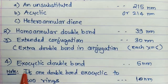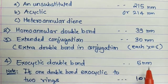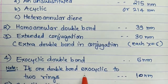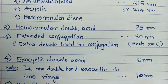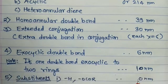Fourth point: the exocyclic double bond. When an exocyclic double bond is present, add 5 nm. However, if one double bond is exocyclic to two rings, you add 10 nm to the basic lambda max value.